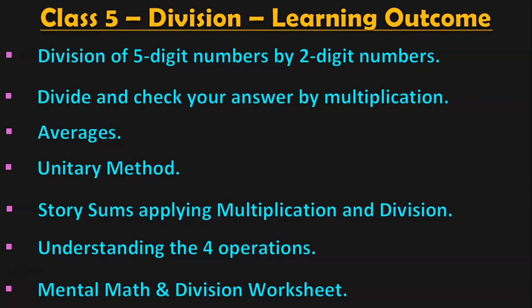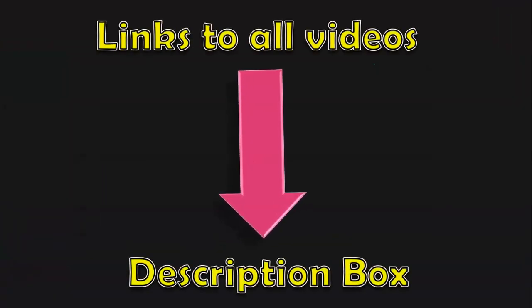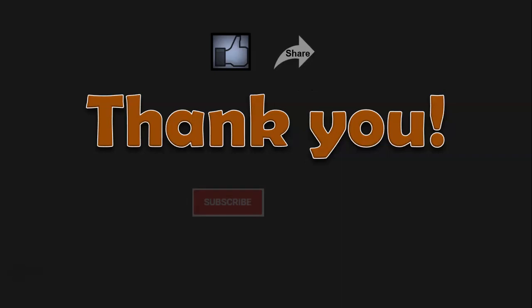These are some of the learning outcomes of children in Class 5 under the topic division. I have completed the first topic, division of 5-digit numbers by 2-digit numbers, in a separate video. In the next video, I covered how to divide and check your answer by multiplication. In this third video for division, I have covered the topic averages. In upcoming videos, I will be doing unitary method, story sums applying multiplication and division, all 4 operations in mathematics, and mental math and division worksheets. Links to all the videos will be given below in the description box for your quick and easy access. Do not forget to click on the subscribe button and the bell button for regular notifications. See you again!